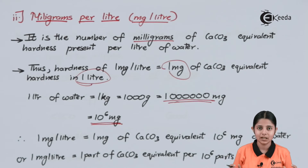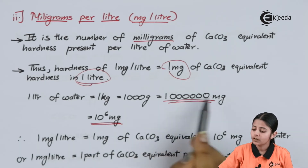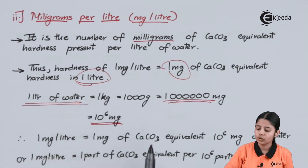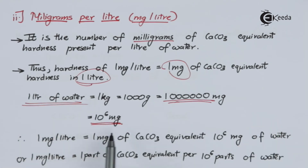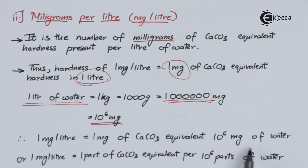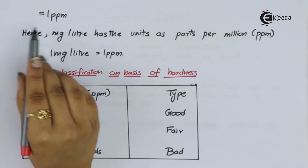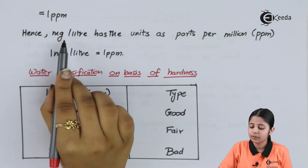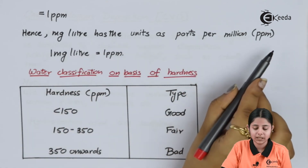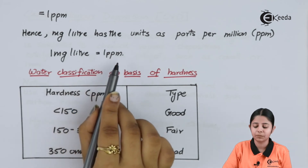So 10^6 mg corresponds to 1 liter of water. Therefore, 1 mg/L is equal to 1 mg of CaCO3-equivalent per 10^6 mg of water, or 1 part of CaCO3-equivalent per 10^6 parts of water — which is nothing but 1 PPM. Thus 1 mg/L corresponds to 1 PPM. Hence 1 mg/L has the same numeric value as parts per million: 1 mg/L = 1 PPM.